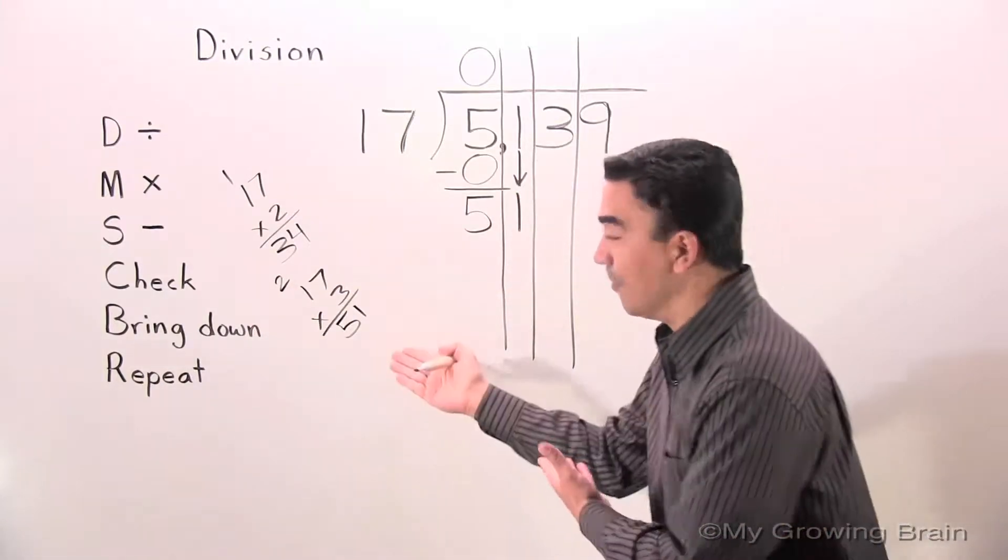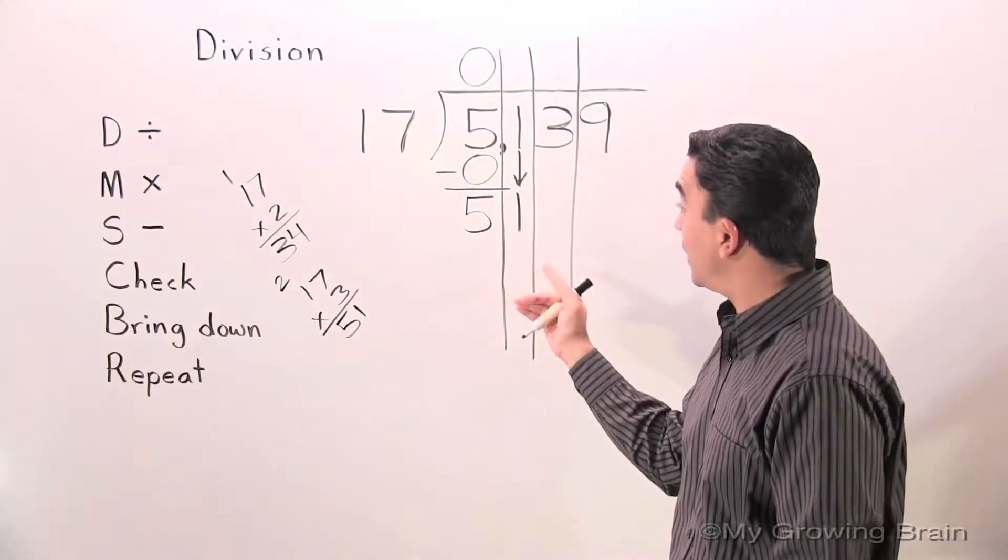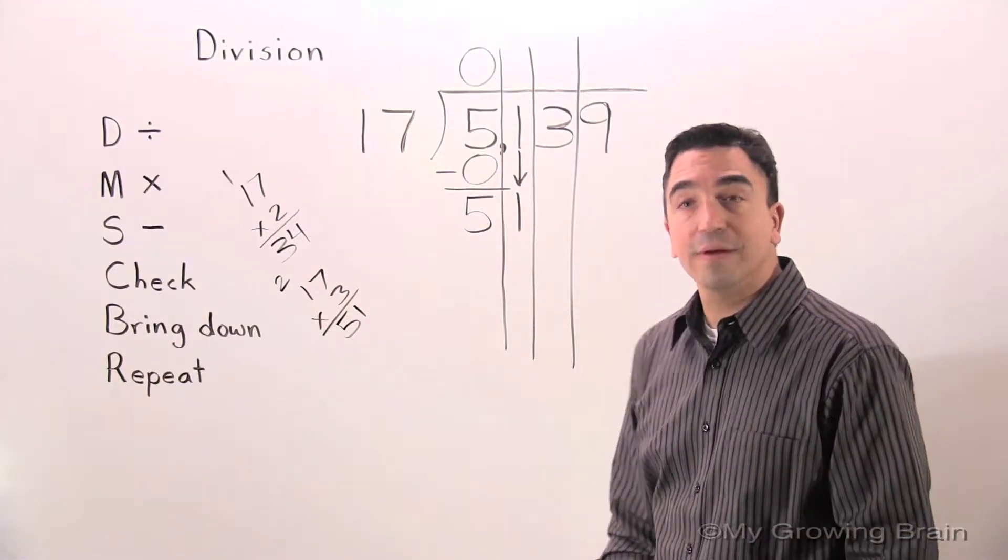All right. What do you know? 51. 51. 17 goes into 51 3 times. Let's write it.